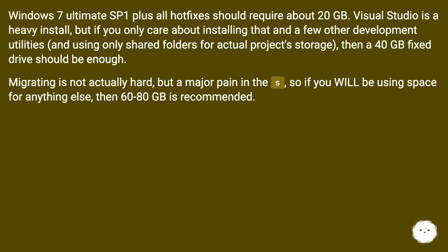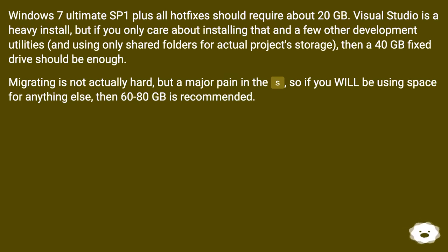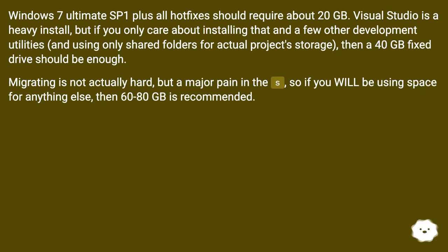Windows 7 Ultimate SP1 plus all hotfixes should require about 20GB. Visual Studio is a heavy install, but if you only care about installing that and a few other development utilities and using only shared folders for actual project storage, then a 40GB fixed drive should be enough. Migrating is not actually hard, but a major pain, so if you will be using space for anything else, then 60 to 80GB is recommended.